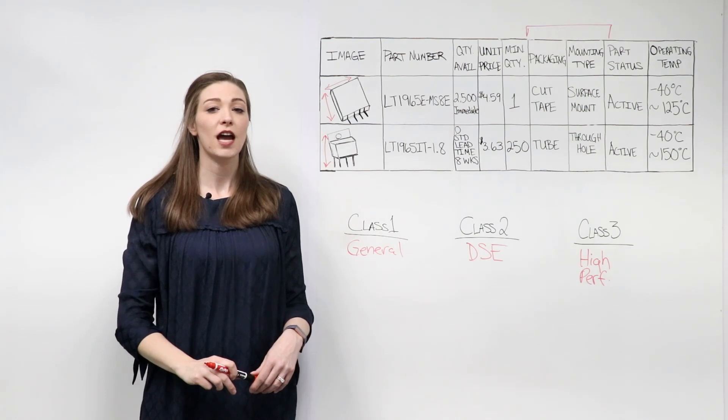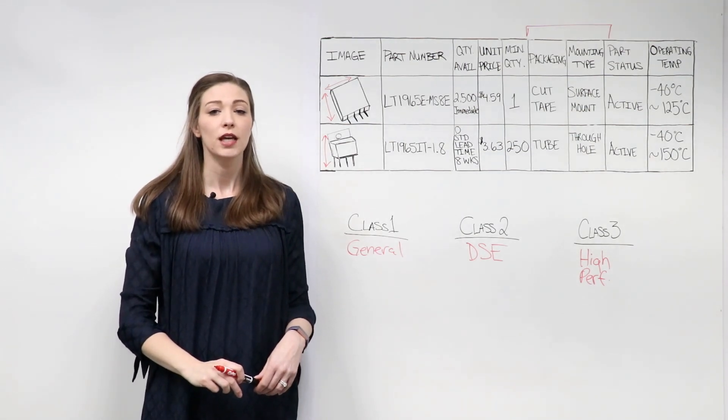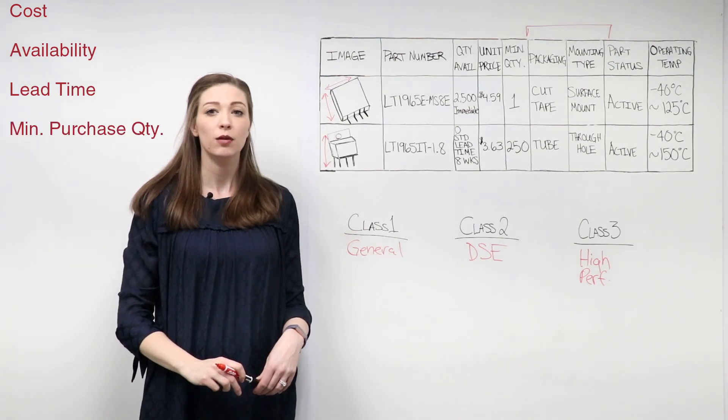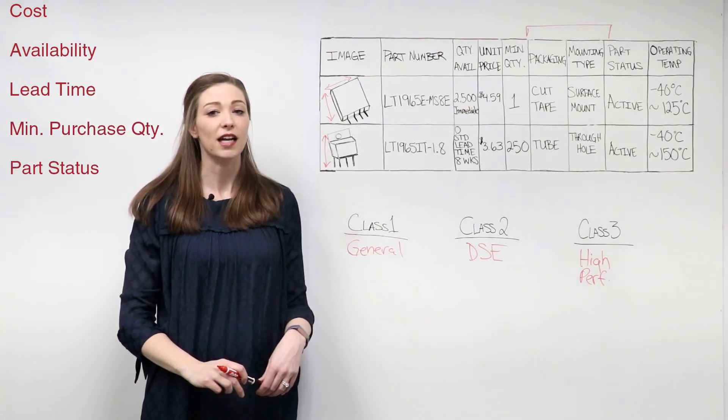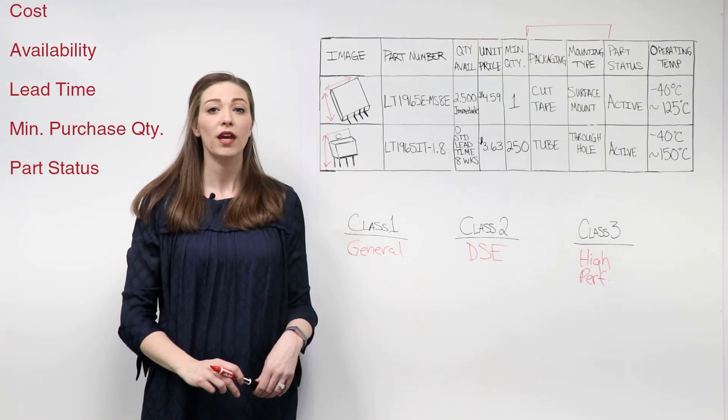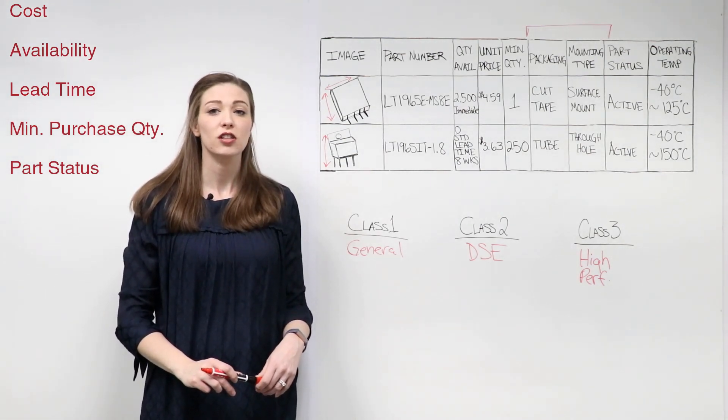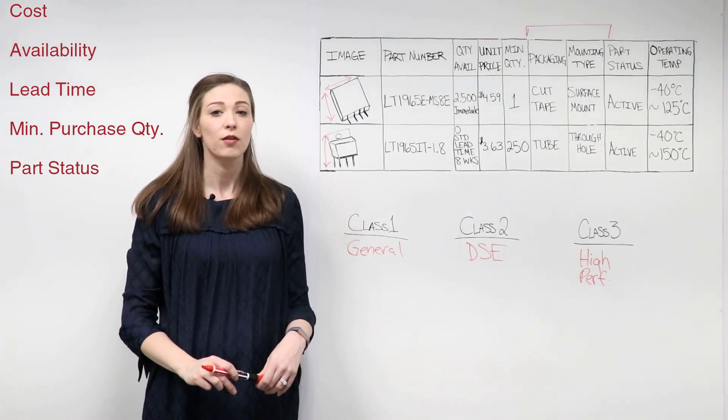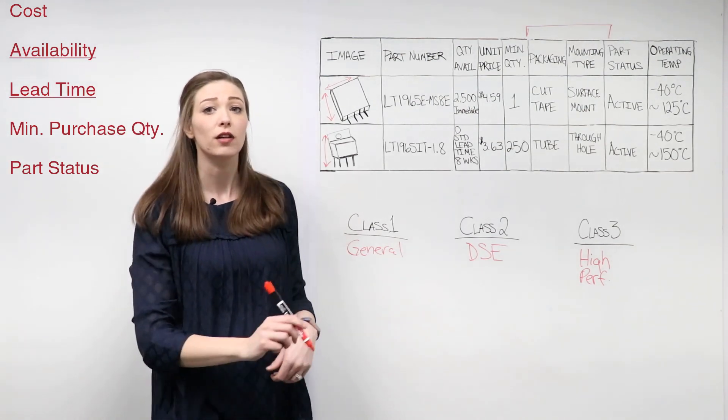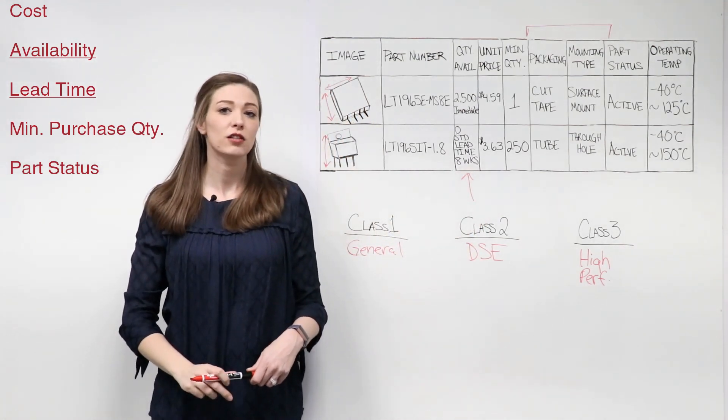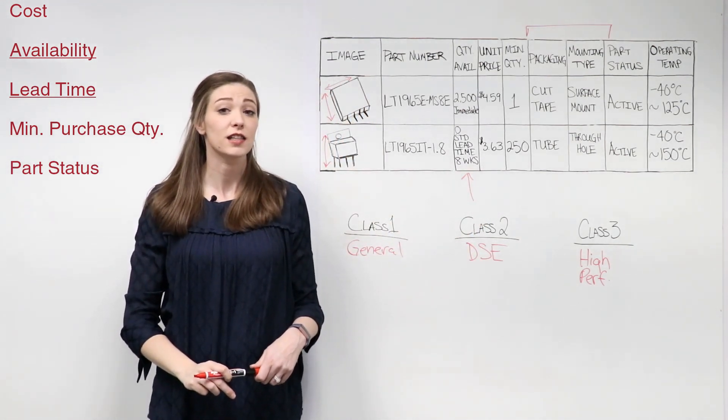Finally, to complete your design on time and on budget, consider the cost, availability, lead time, minimum purchase quantity, and part status. While a component may meet the mechanical and manufacturing requirements, typically projects are cost-driven and time sensitive. Pay close attention to the availability and lead time, as these could have a detrimental effect on your project if not considered.